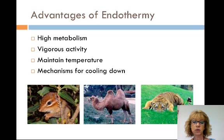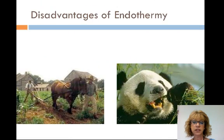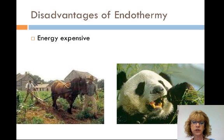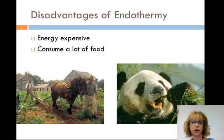Endothermy also provides mechanisms for cooling down in high temperatures, so endotherms can withstand high temperatures. Some disadvantages: endothermy is energy expensive, especially in low temperatures. For example, at 20 degrees Celsius, the human resting metabolic rate is 13,000 to 18,000 calories per day, while in alligators it's only 60 calories per day. Therefore, endotherms need to consume a lot more food than ectotherms.